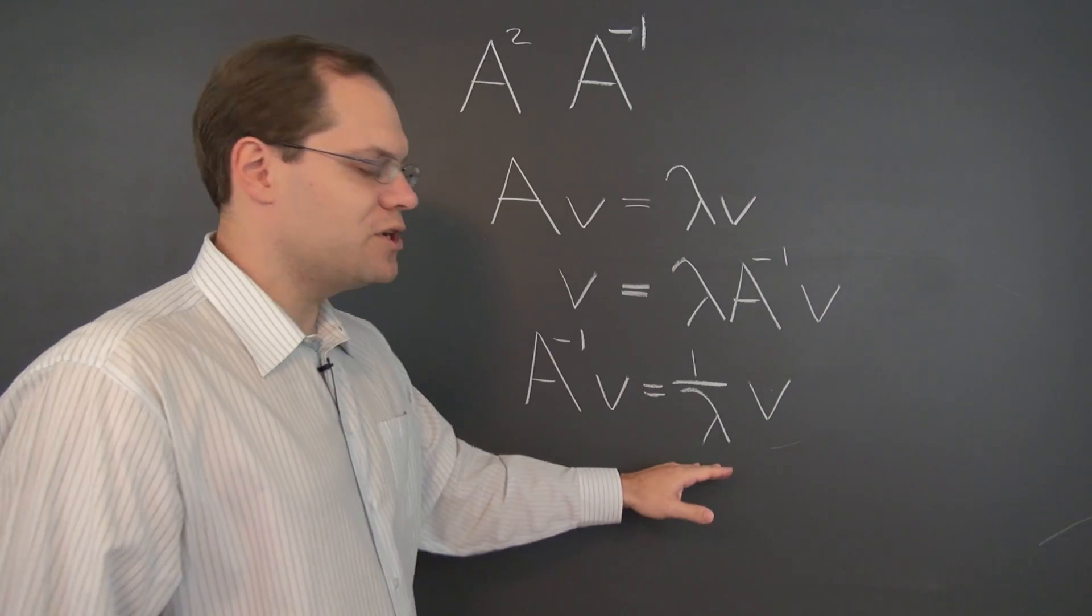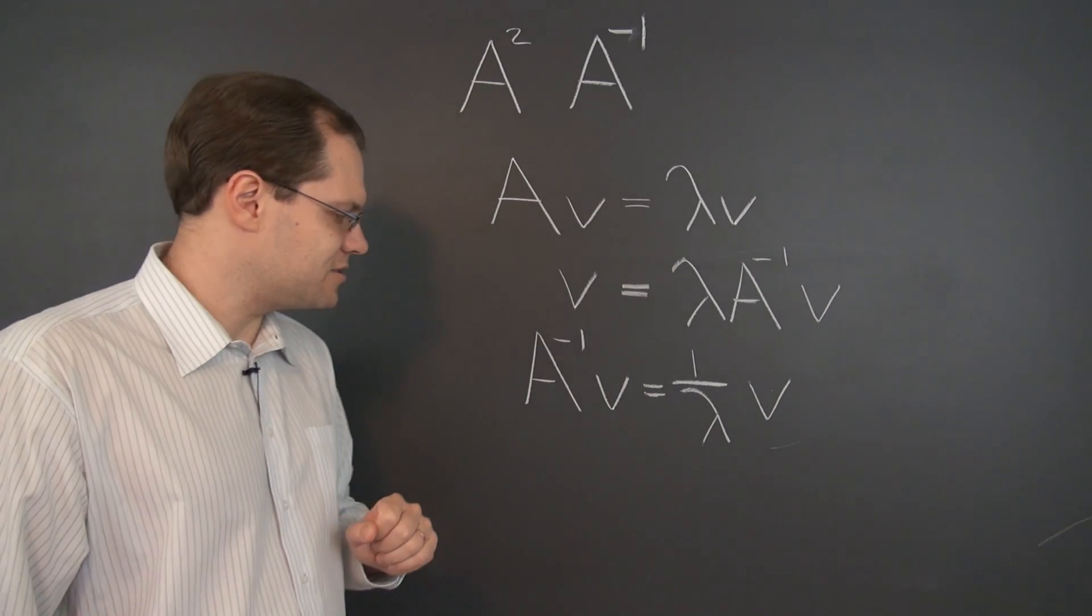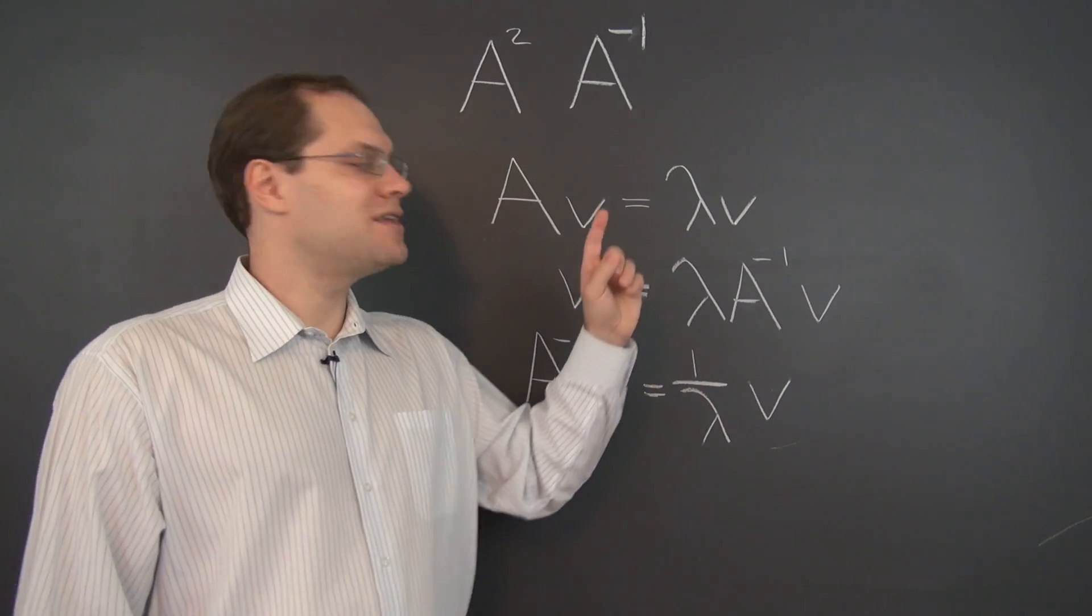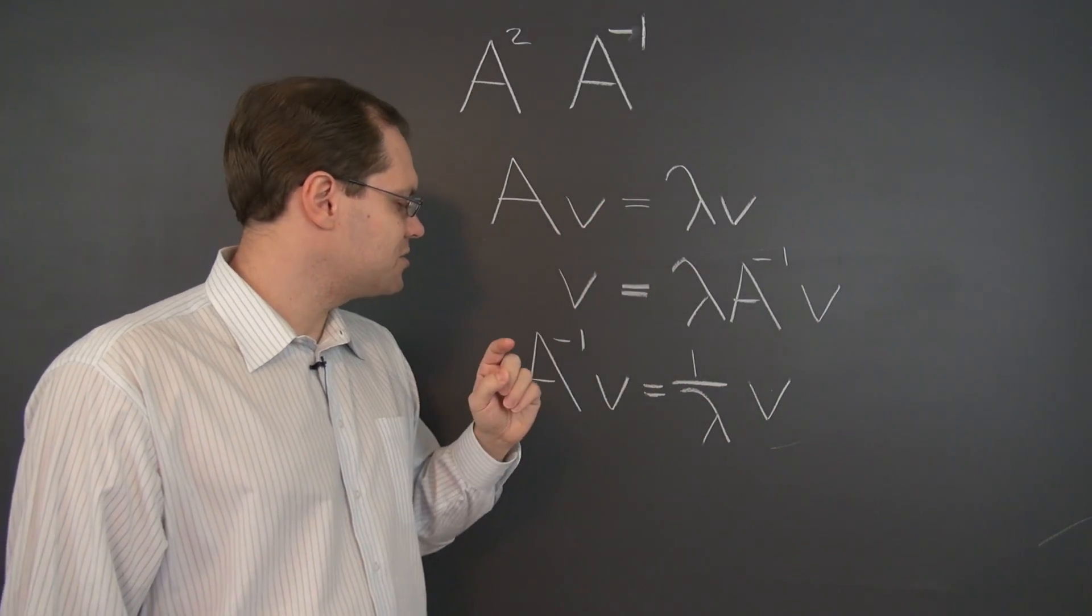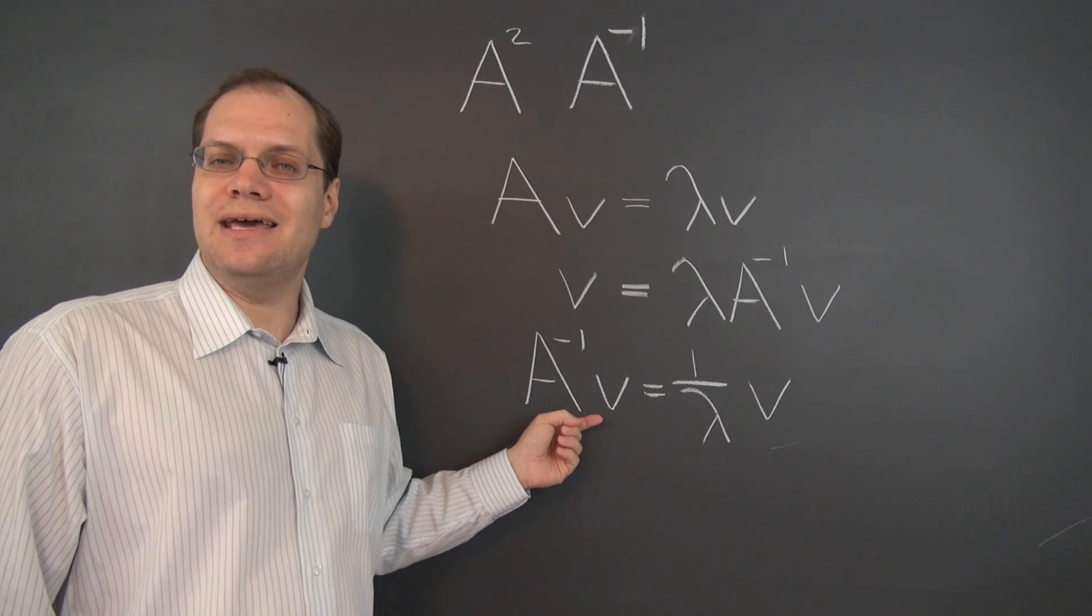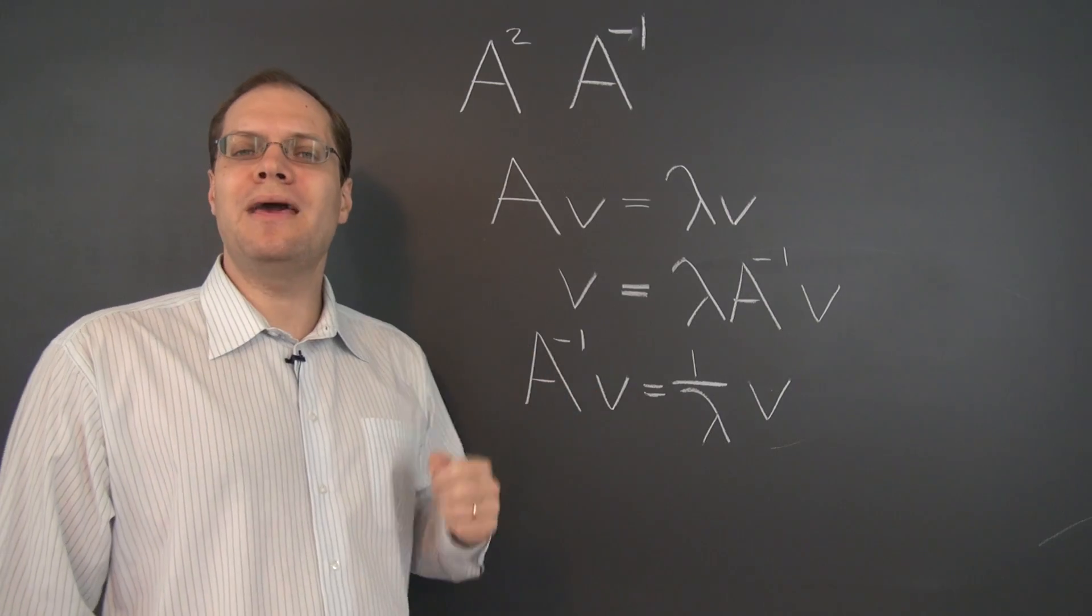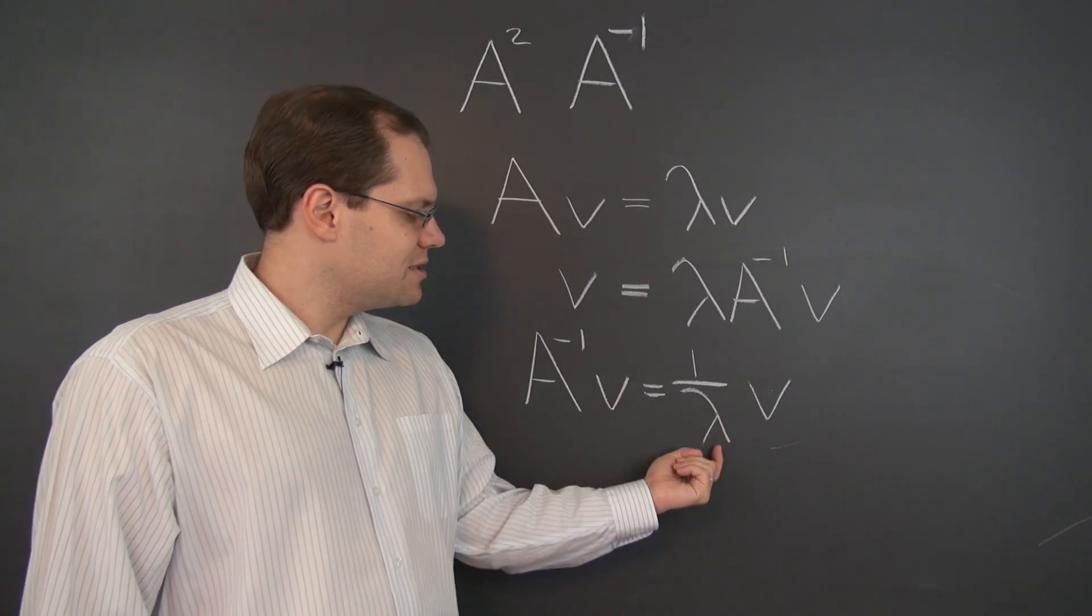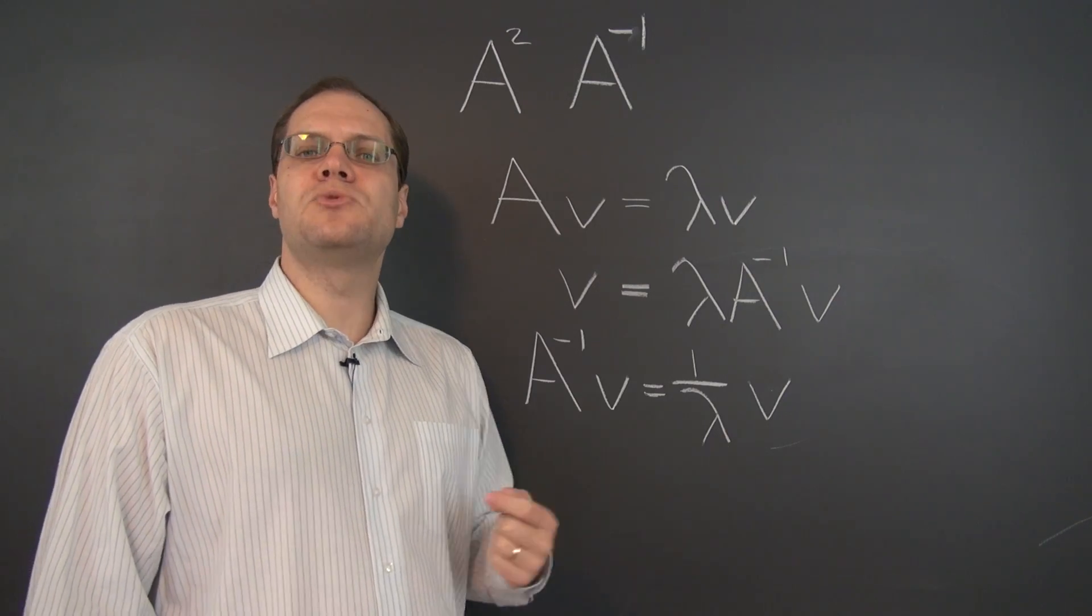And what's our interpretation of this equation? Well, our interpretation of this equation is that V, which was the eigenvector of the matrix A, is now an eigenvector of the matrix A inverse. So it remains an eigenvector. And what's the corresponding eigenvalue? Well, it's sitting right here. It's 1 over lambda.